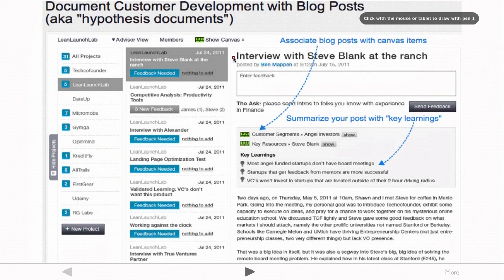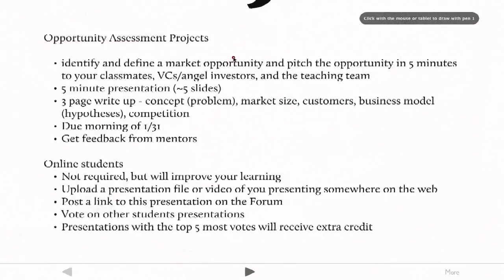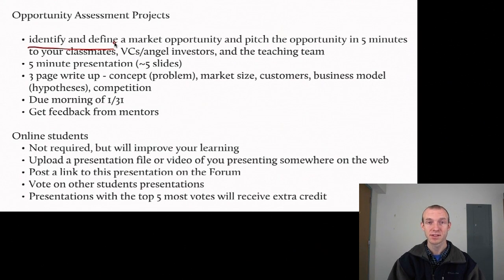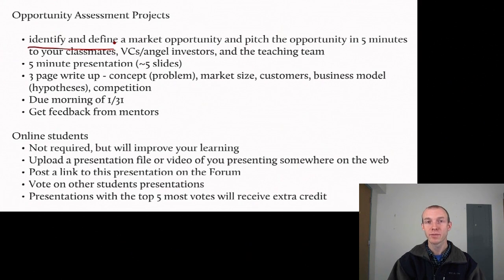Next, let's talk about the OAP — the Opportunity Assessment Project. Your task is to identify and define a market opportunity and pitch your classmates, VC and angel investors we're bringing into class, and the teaching team. It should be a five-minute presentation with about five slides. We also want to see a three-page write-up where you discuss the concept, market size, customers, business model hypotheses, and competition. These are due on the morning of January 31st by 9 a.m., and you should get feedback from your mentors ahead of your presentation.